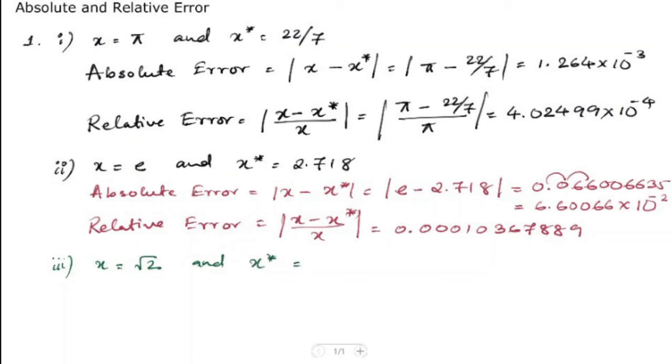So the absolute error is equal to x minus x star, which is root 2 minus 1.414, that gives us the value as 0.000213526.